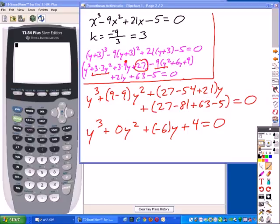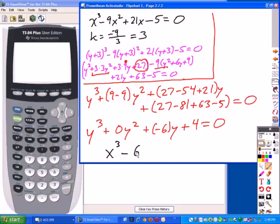Or in other words, and again changing back the variable to x, this becomes x³ - 6x + 4 = 0. So we've transformed our polynomial.